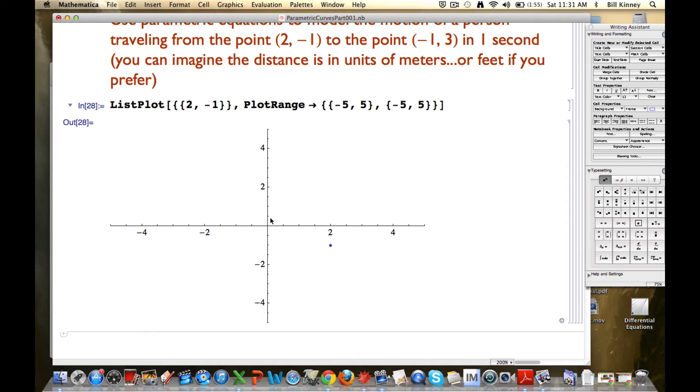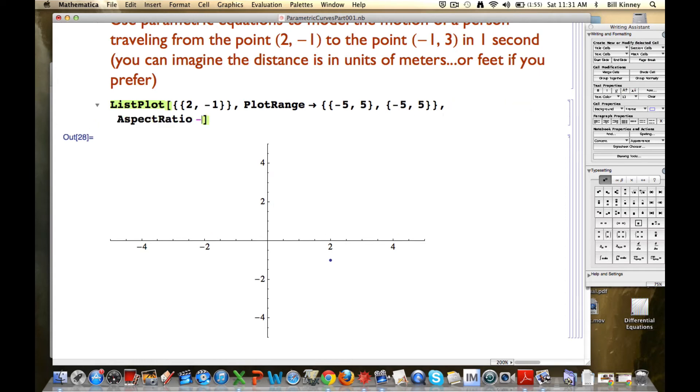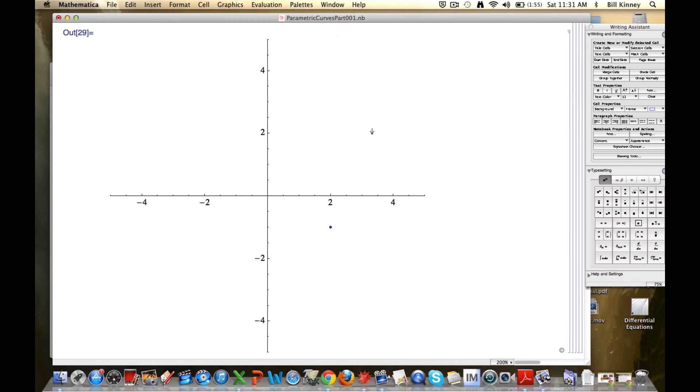Do notice the scales on the axes are not the same. Mathematica picks these scales to make them look nice for a lot of examples. But if you want to make the scales the same, I can add another option here, put a comma, AspectRatio, capital A, capital R. The capitalization there is important. And then put an arrow, and then put the word Automatic, and that will make the scales the same.